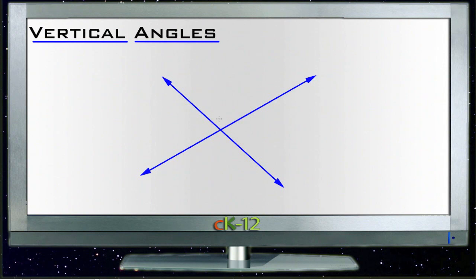So here we have a total of four angles. Let me change colors first so I don't get confused. We have angle A, B, C, and D.